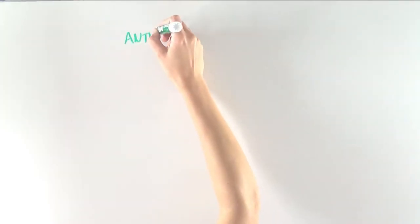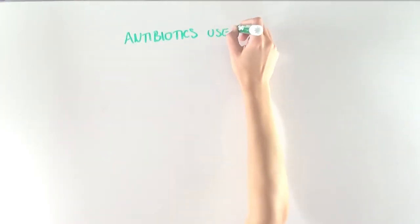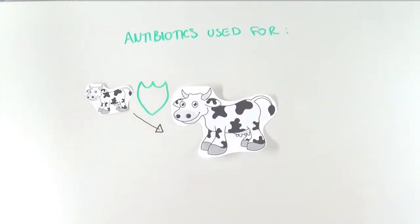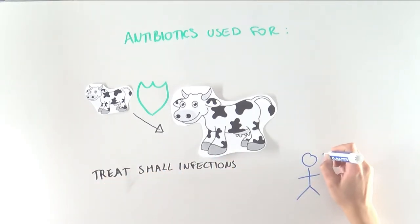However, since their discovery, antibiotics have been used more and more when they are not absolutely necessary. People are now using antibiotics for a whole range of things. For example, to prevent cattle from being infected by bacteria and to make them larger, to treat small infections which could clear on their own, or when someone is infected by a virus.